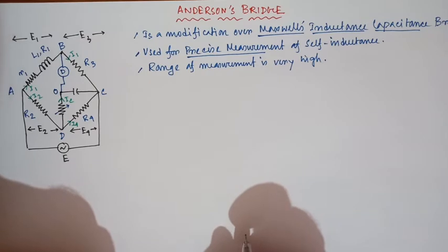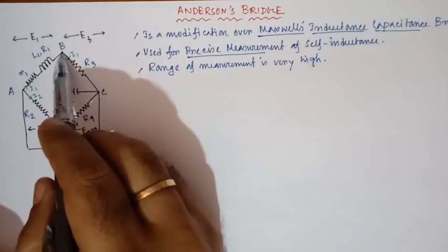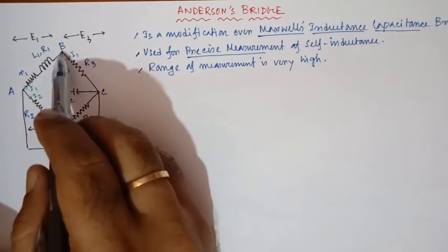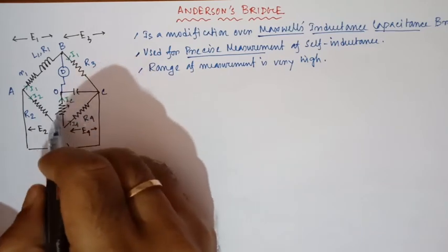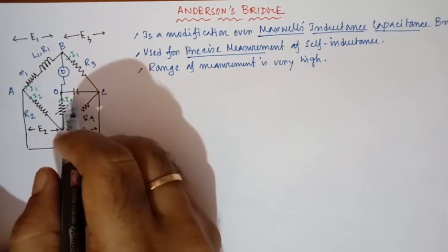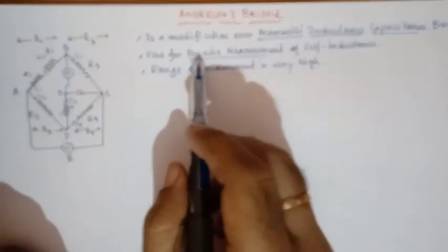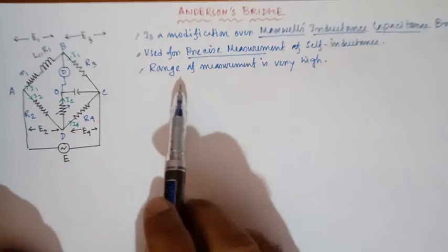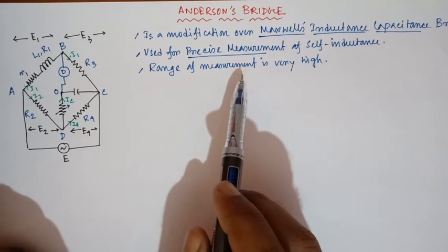So what differences can you find? Normally the detector is connected between point B and point D, but here the detector is connected between B and O — this area is something new in this particular bridge. By this bridge we can measure self-inductance, and the measurement is very precise.